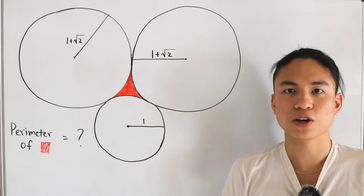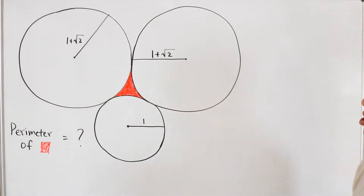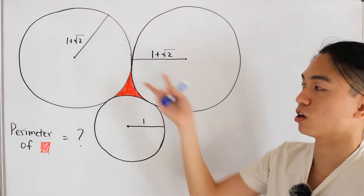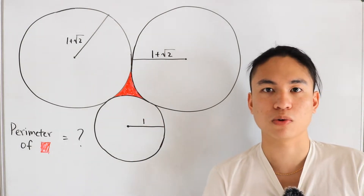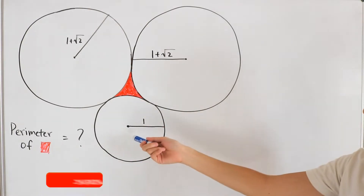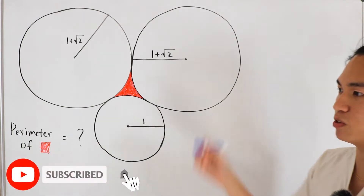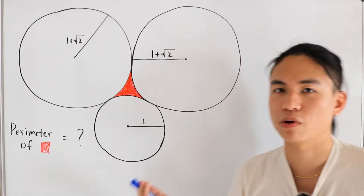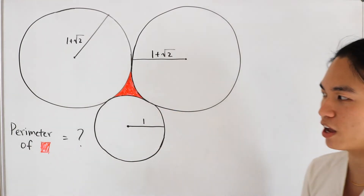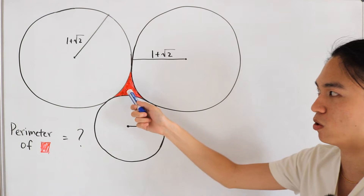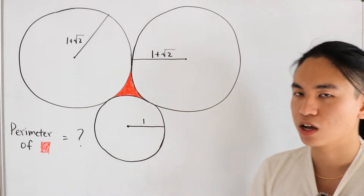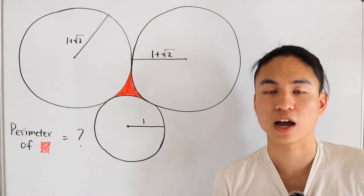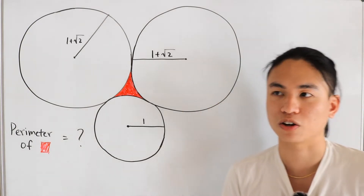Here's a nice geometry problem. We're given two different types of circles: one circle with radius one plus the square root of two, and another circle with a radius of one. These three circles are all mutually tangent to each other, forming a shaded area. We don't need to solve for the area — instead we'd like to know the perimeter of this shaded area. Since we're solving for perimeters with mutually tangent circles, we're going to need to utilize the arc length formula.